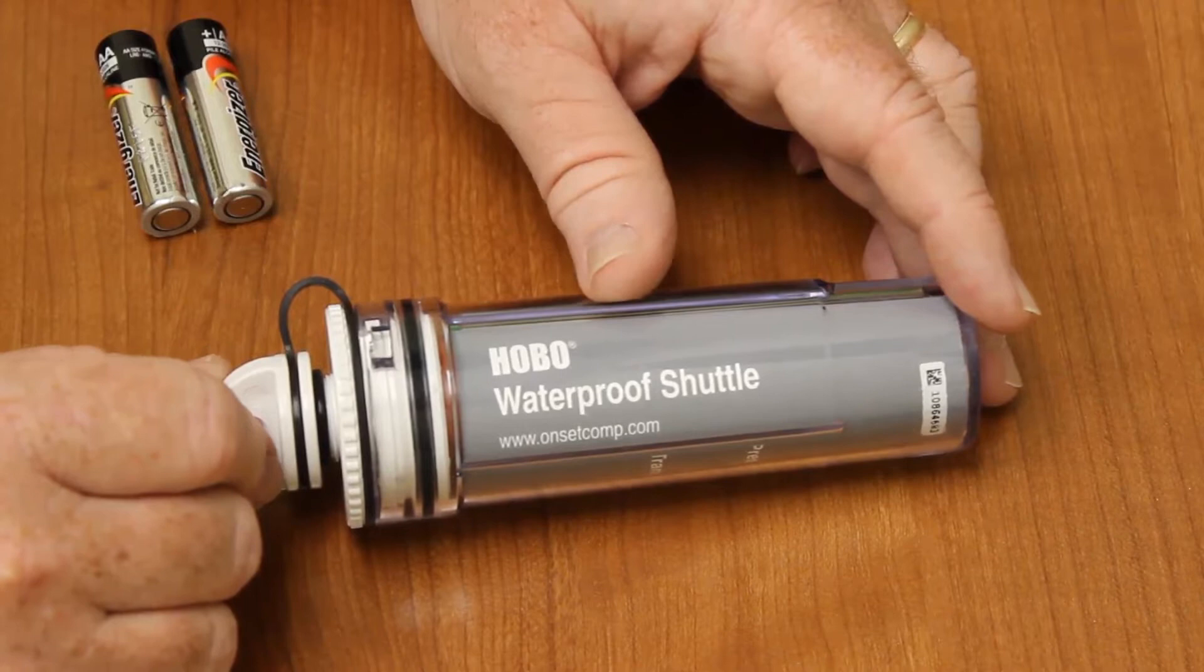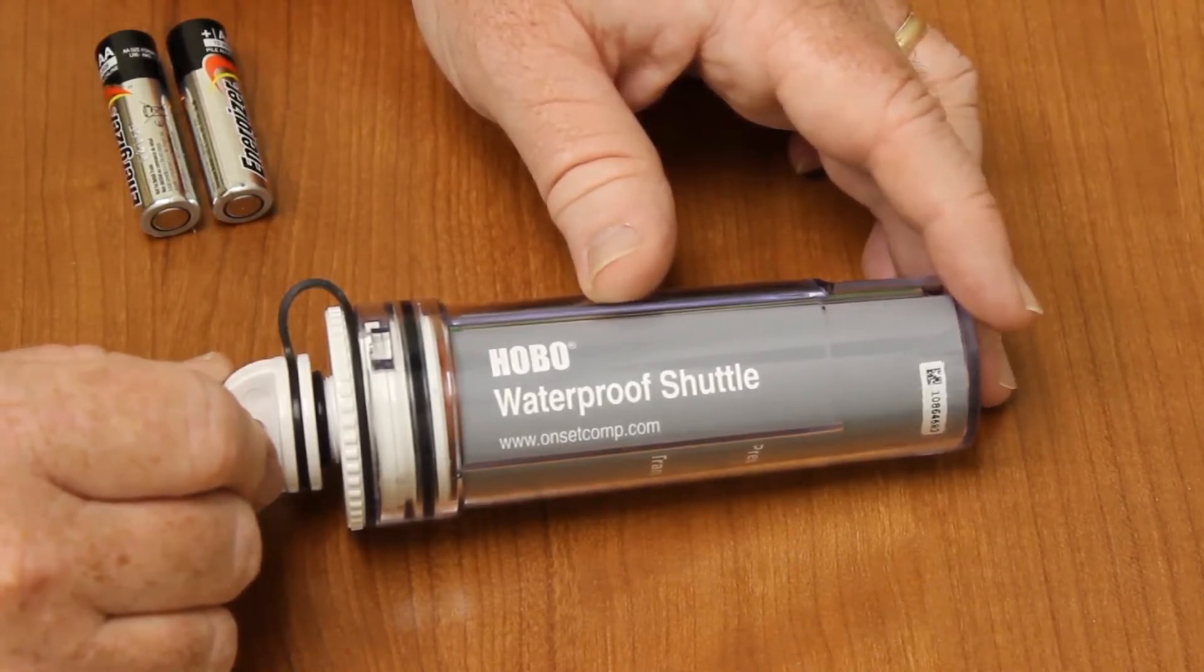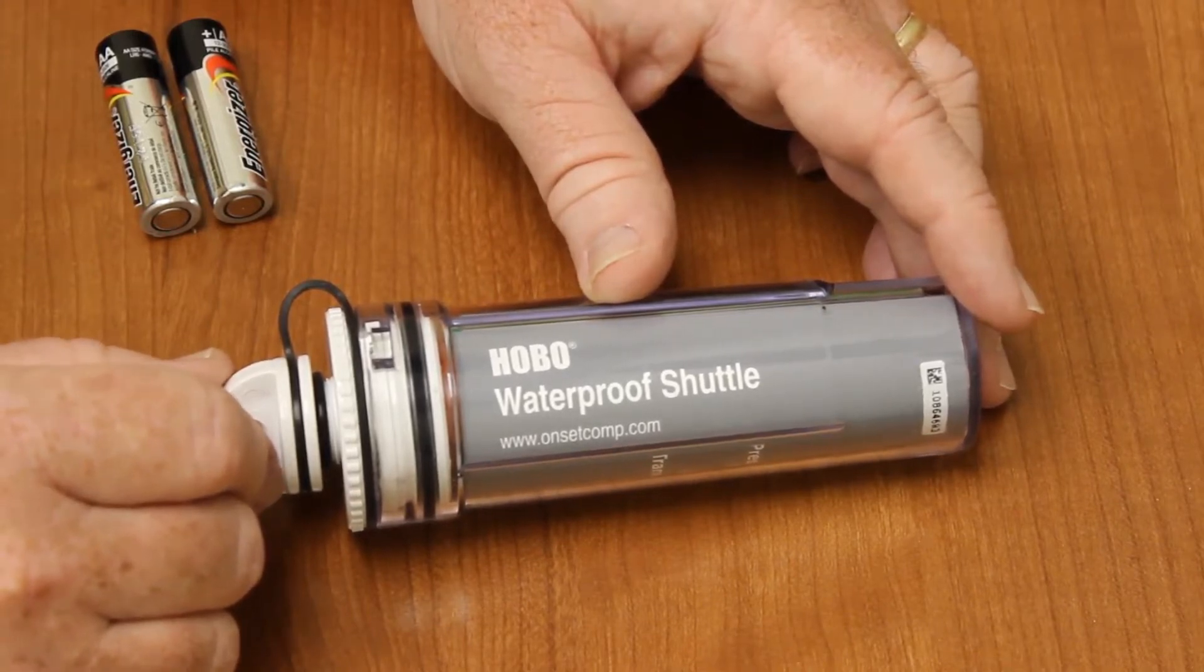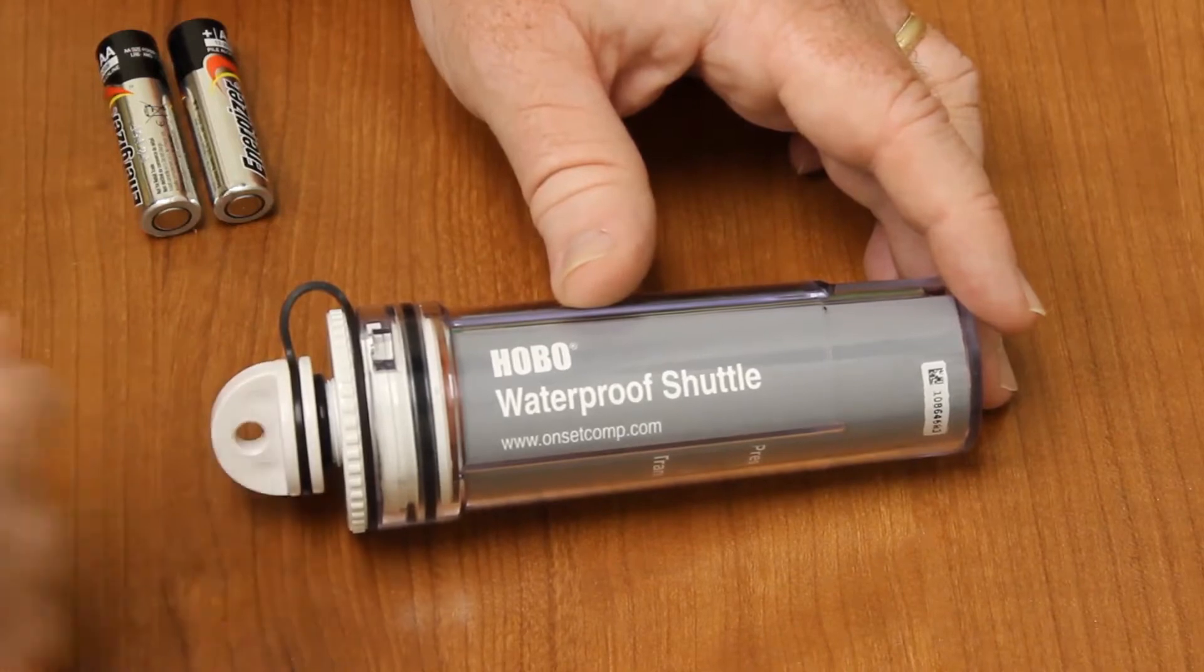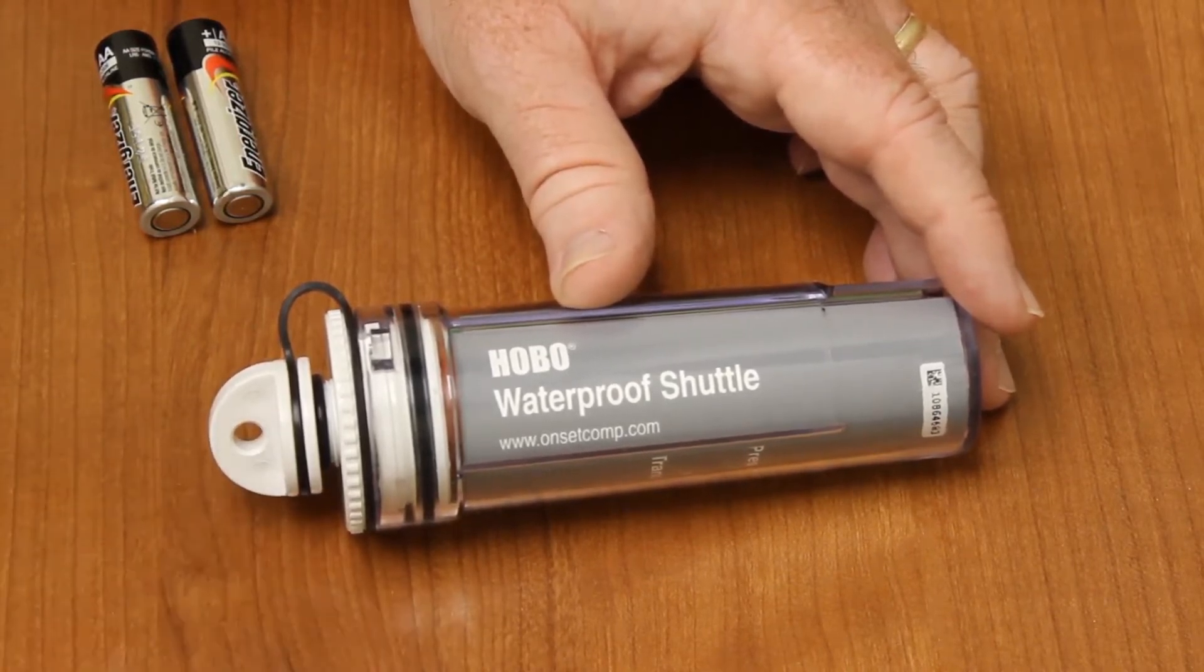We would suggest you have a look at the manual. If you don't have a manual handy, you can always go on our website, onsetcomp.com, go to the UTW-1 page, and under documentation is the user manual. Have a look at that, and it explains all these steps in detail.